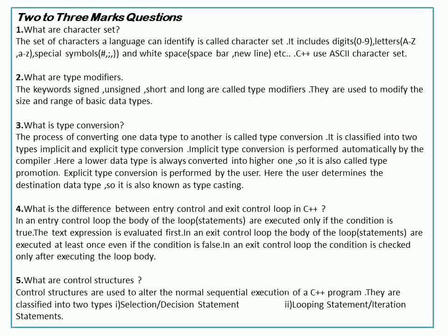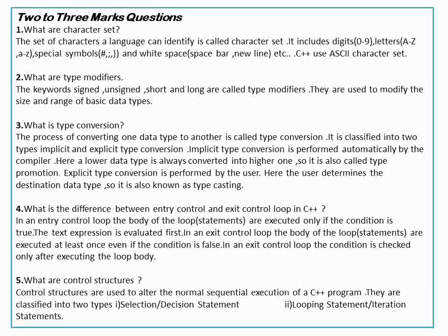Entry control and exit control loops in C++: the For loop and While loop are entry control loops. The Do-While loop is an exit control loop. For an entry control loop, statements execute based on conditions. Jump statements alter the normal flow of execution. These include selection statements and looping statements.